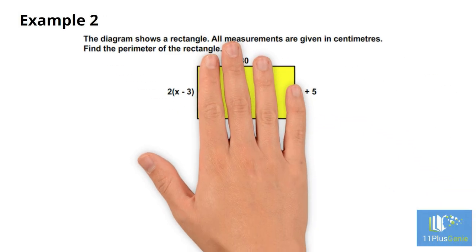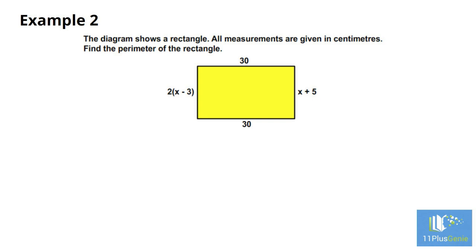Example 2. The diagram shows a rectangle. All measurements are given in centimeters. Find the perimeter of the rectangle.